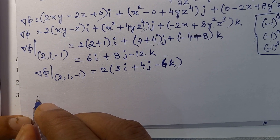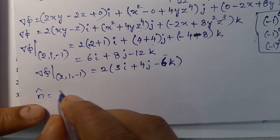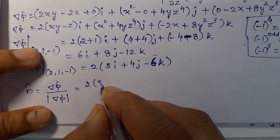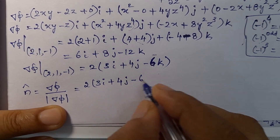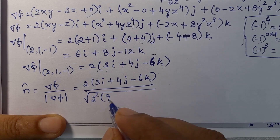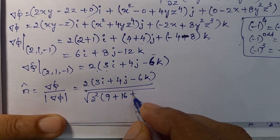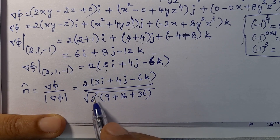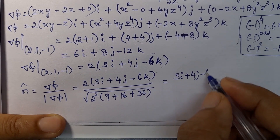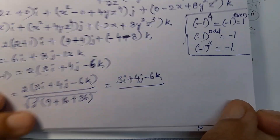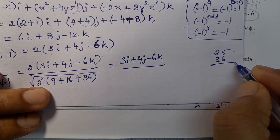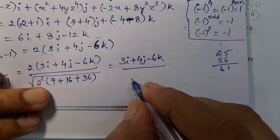Next, the required unit normal vector equals del phi divided by magnitude of del phi, which equals 2 times (3i plus 4j minus 6k) divided by the magnitude. The magnitude: 2 squared times (3 squared plus 4 squared plus 6 squared) equals 4 times (9 plus 16 plus 36). The factor of 2 cancels, giving 3i plus 4j minus 6k divided by square root of (9 plus 16 plus 36). That is 25 plus 36 equals 61, so square root of 61.